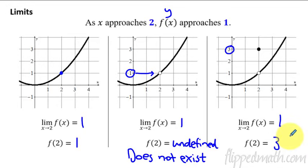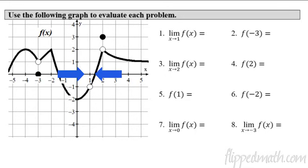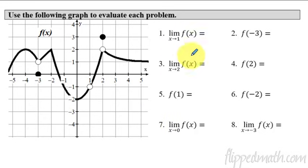Let's practice this. If you think you already understand this — maybe you've done this in pre-calc — this might be a good time to pause, then fast forward and see if you get the right answers. I'm going to show you step by step how to do each of these. First one: the limit as x approaches 1. We're looking from both the left side and the right side of 1, approaching the x value of 1 on the graph. The y value it is approaching is negative 1.